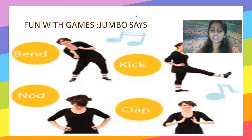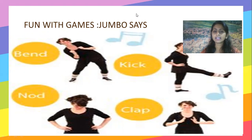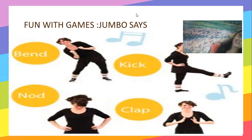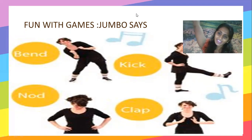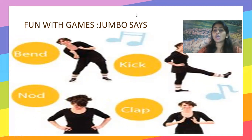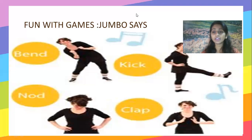Let's do one rehearsal. Are you ready? Jumbo says bend to your right. Bend right, then left, then again left, and to your right. Jumbo says wiggle your fingers. And Jumbo says hooray and raise your hand. Jumbo says clap your hands. Jumbo says nod your head. Jumbo says kick — give a kick just like you kicked a ball. This is the way you play the game. Parents and children, enjoy the game and take a video of your child.